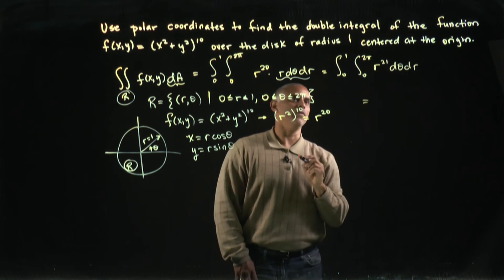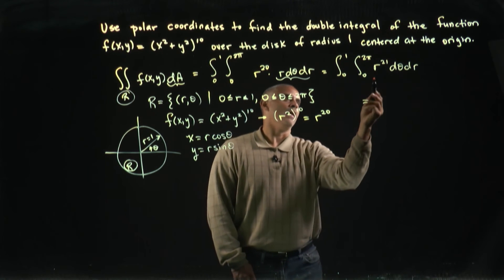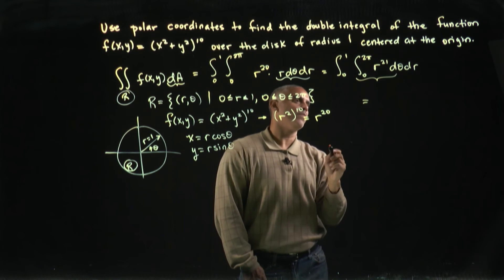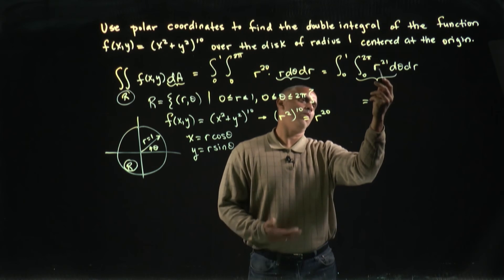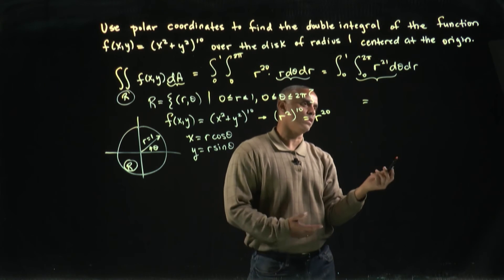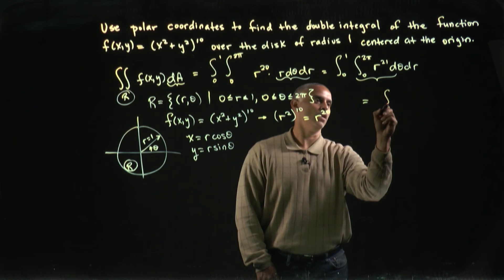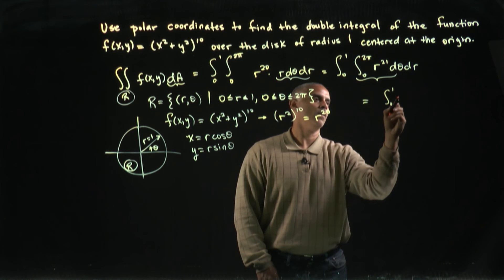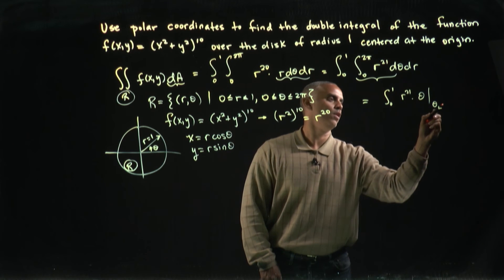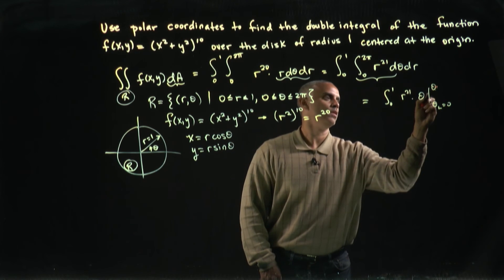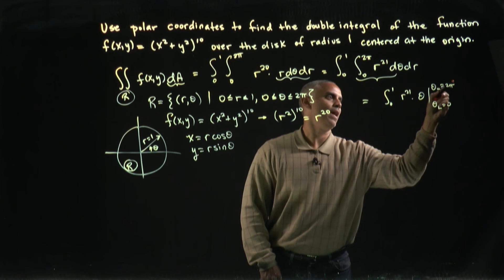On this inner iterated integral, we're integrating with respect to θ. If I integrate with respect to θ, r^21 is just seen as a constant. So I get the integral from zero to one, r^21 times θ evaluated from θ = 0 to θ = 2π, dr.